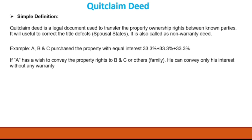A can convey only his interest without any warranty, as stated earlier — only his 33% rights to a family member or B and C. He cannot give any warranty because he doesn't know if B took a loan or if taxes are pending. That's why the quitclaim deed is always called a non-warranty deed. Through this deed you can correct title defects and convey your ownership rights, but you cannot give a clear title to someone else. For that, you need a warranty deed.